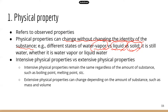Now there are two groups of physical properties. Intensive physical properties remain the same regardless of the amount of substance. Basically, it doesn't matter how much substance you have — these physical properties will be the same. Examples are boiling point and melting point. So it doesn't matter how much water you have, whether you have one gram or a thousand grams of water, the boiling point for water is still the same — it does not change.